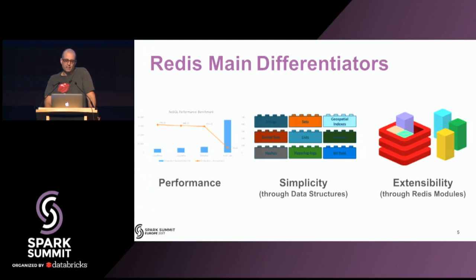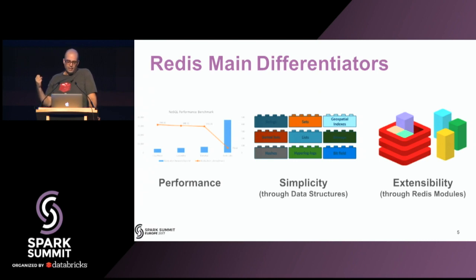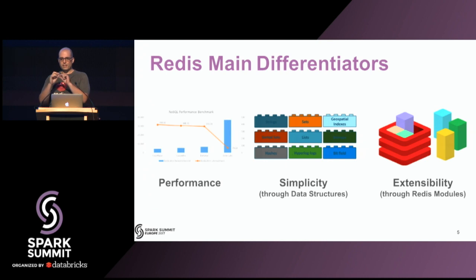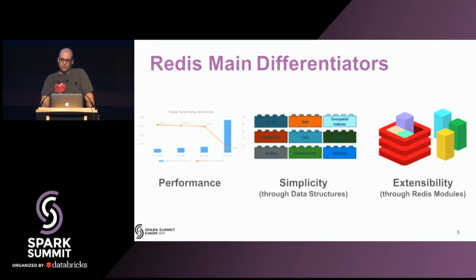The differentiators of Redis are, first of all, performance. It's super fast compared to other databases because it's written in optimized C, it's in-memory, and it's pretty simple. The simplicity means it's kind of like a Lego brick set for databases. It's not a database per se, but you can take all those data structures and model your own solution. It's extensible because Redis 4.0 supports modules, which opens up some pretty interesting opportunities.